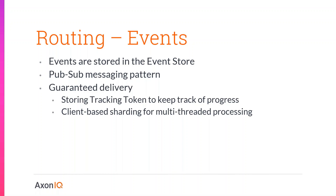To summarize event publishing: events are stored inside the event store of Axon Server following a pub/sub pattern, meaning every message is published to all interested consumers. There is guaranteed delivery via tokens - every message is accompanied with a token that the consumer stores locally or in its own database. When the connection breaks or the application restarts, it retrieves that last token and sends it to the server to receive all events appended since then. Sharding for multiple application instances uses tracking tokens, ensuring every event is handled by exactly one instance regardless of whether you have four threads on one instance or one thread each on four instances.